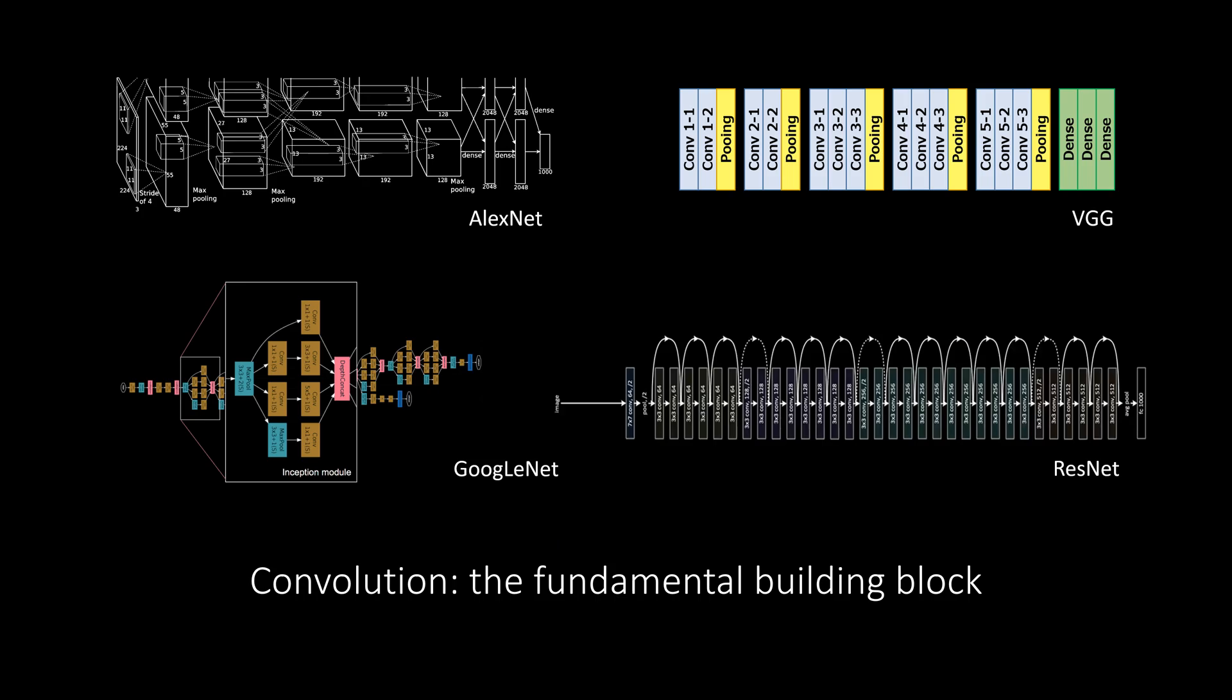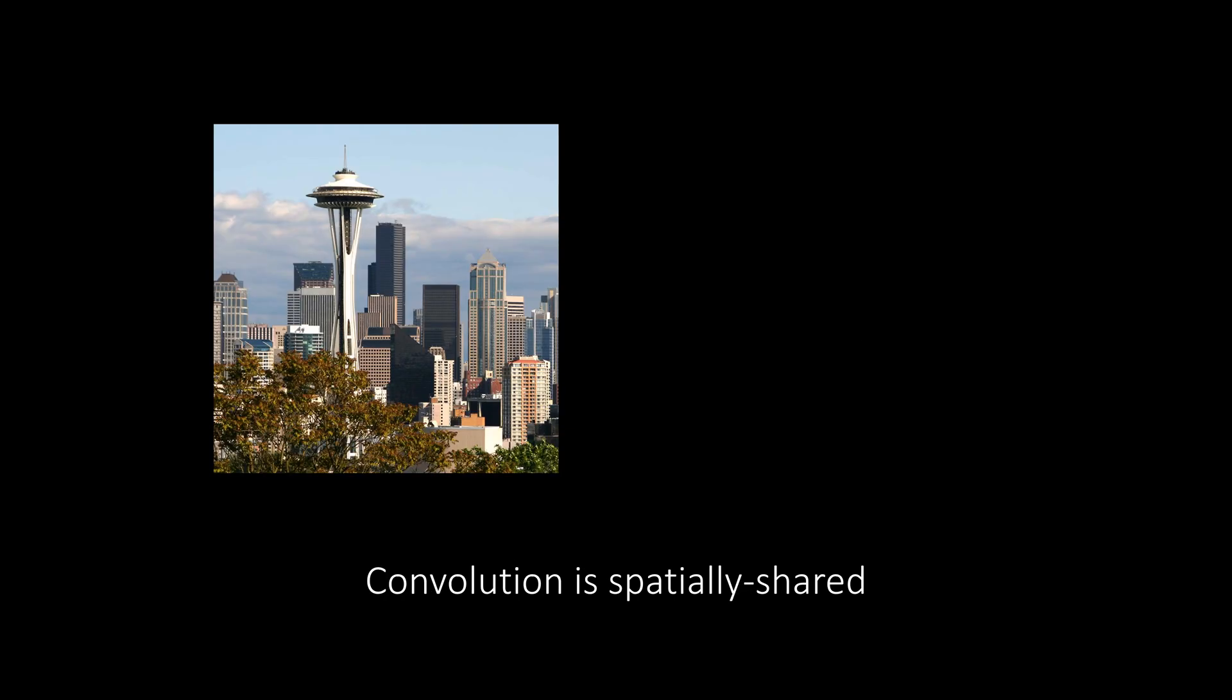Convolution is the fundamental building block of modern deep neural networks. A major property of standard convolution is the spatial sharing of weights. Although widely considered as an advantage, spatial sharing is not always ideal.